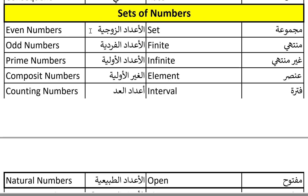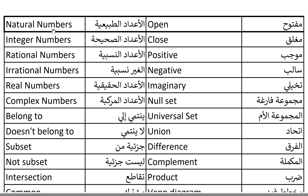Sets of numbers. Sets of numbers. Even numbers. Even numbers. Odd numbers. Odd numbers. Prime numbers. Prime numbers. Composite numbers. Composite numbers. Counting numbers. Counting numbers. Set. Set. Finite. Finite. Infinite. Infinite.